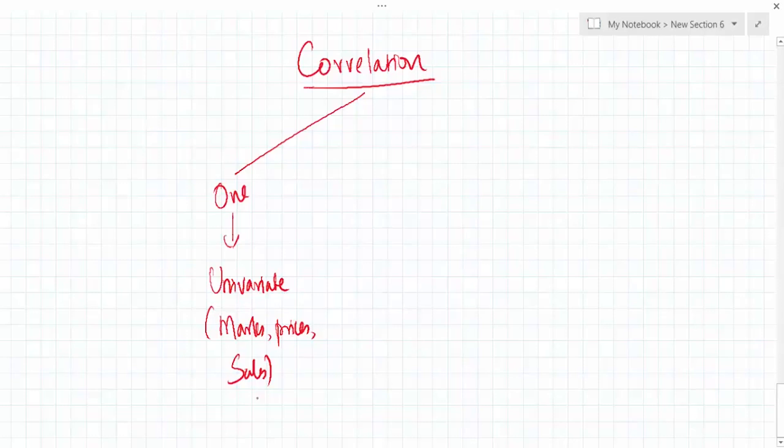But in reality, we come across more than one variable. When we see a situation where we have more than one variable, and if we want to study those two variables, then it will be called a bivariate distribution.